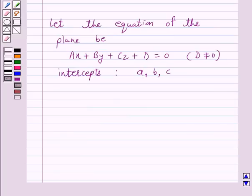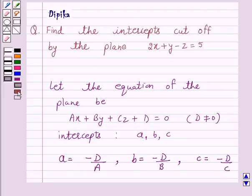Hence, the intercepts a, b, c can be written as a equals minus D upon A, b equals minus D upon B and c equals minus D upon C. So, this is the key idea behind our question.